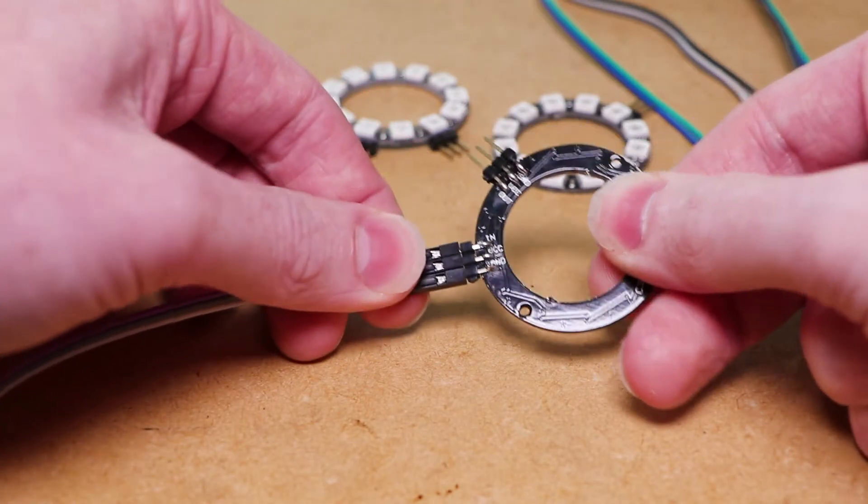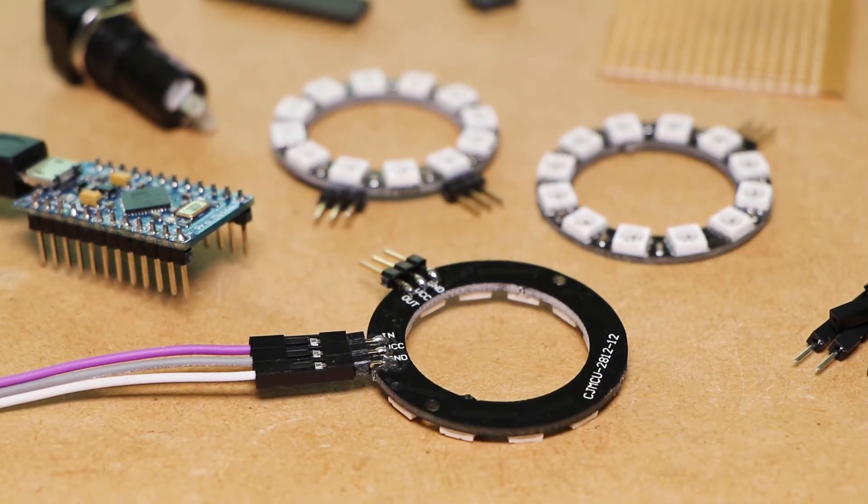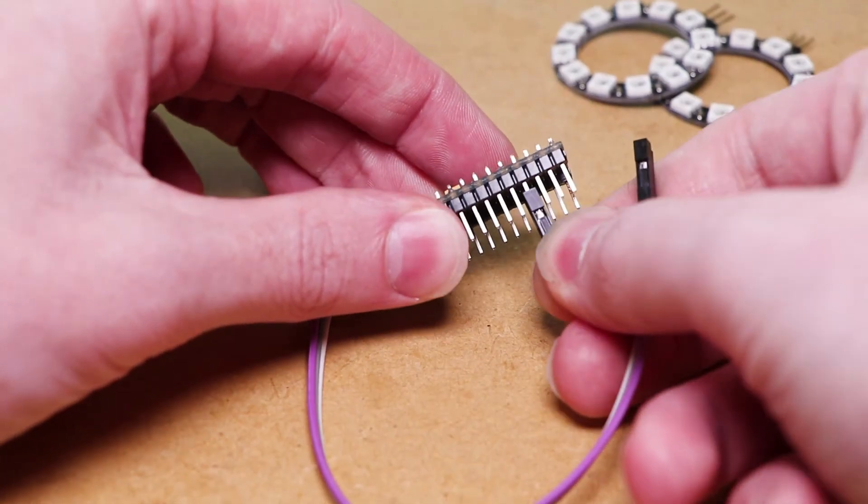I'm then going to daisy chain the three RGB LED rings together, making connections to ground, 5 volts, and digital pin 6 on the Arduino.